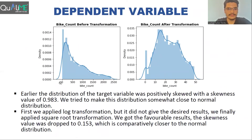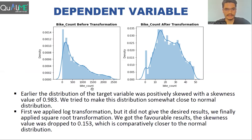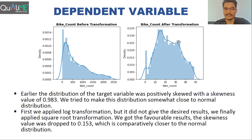After that, we transformed the target variable to achieve a better distribution. Before the transformation the data was very skewed. We first tried log transformation but did not get the desired results. Then we tried square root transformation, which decreased the skewness and made the distribution comparatively closer to normal.